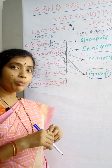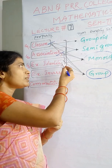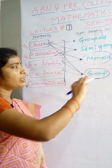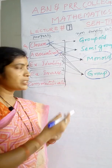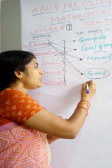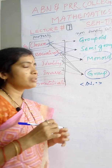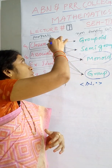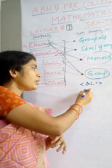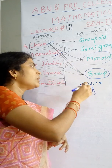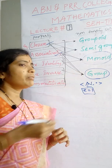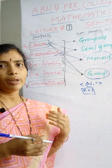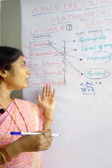A group is a non-empty set satisfying four properties in order: closure property, associativity, existence of identity, and existence of inverse. The most common example of what is not a group is the set of naturals under multiplication (N, ·), because in this set every element satisfies closure, associativity, and identity (identity element is 1), but every element does not have an inverse. That's why it is not a group.